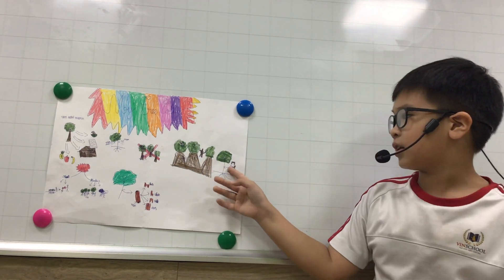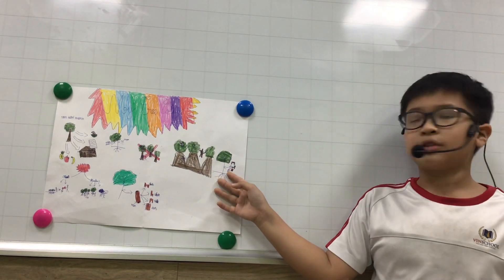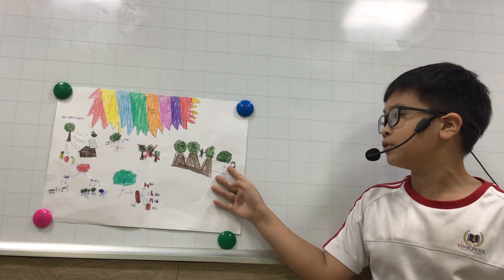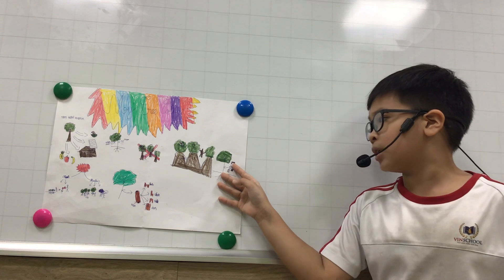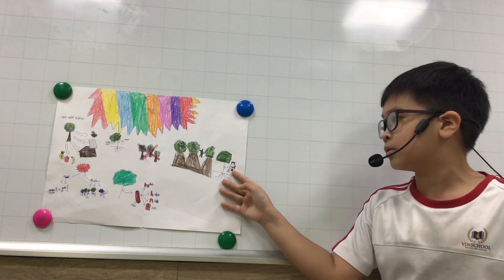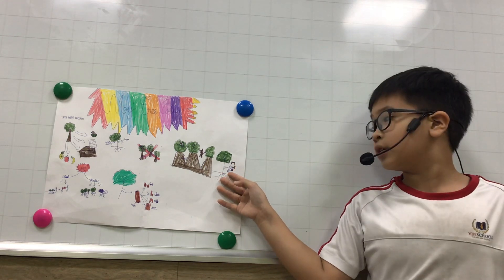In the classroom, you can see some things made by wood. For example, my table, chair, door, and paper.